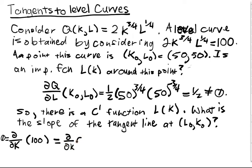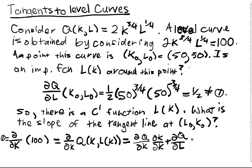And now we consider the partial of Q evaluated at K and L(K). So for any value K around K naught, this is valid. And we just use the chain rule. So this is ∂Q/∂K ∂K/∂K plus ∂Q/∂L ∂L/∂K.